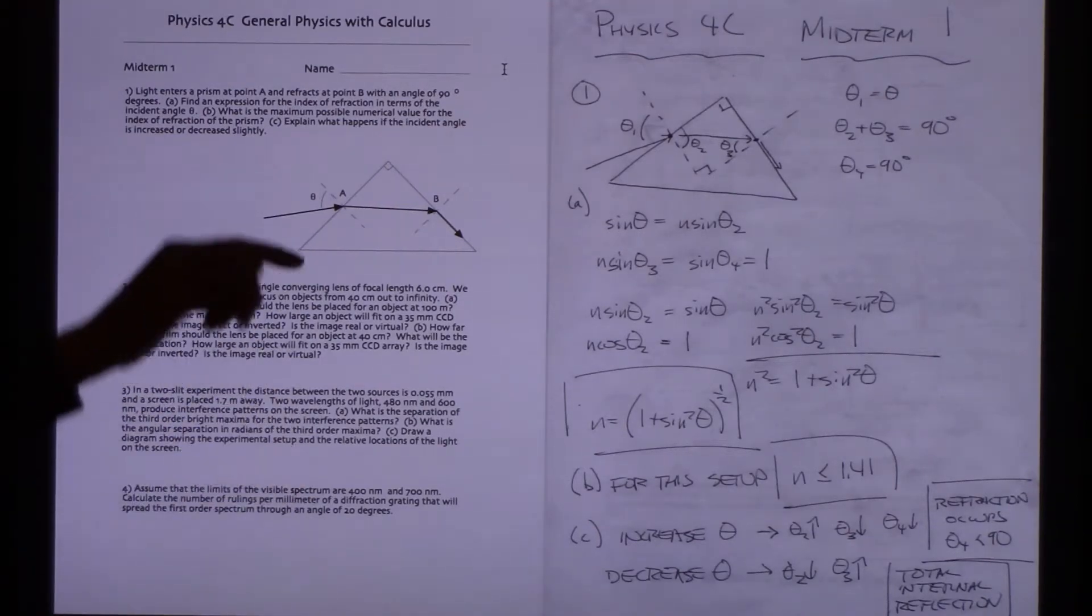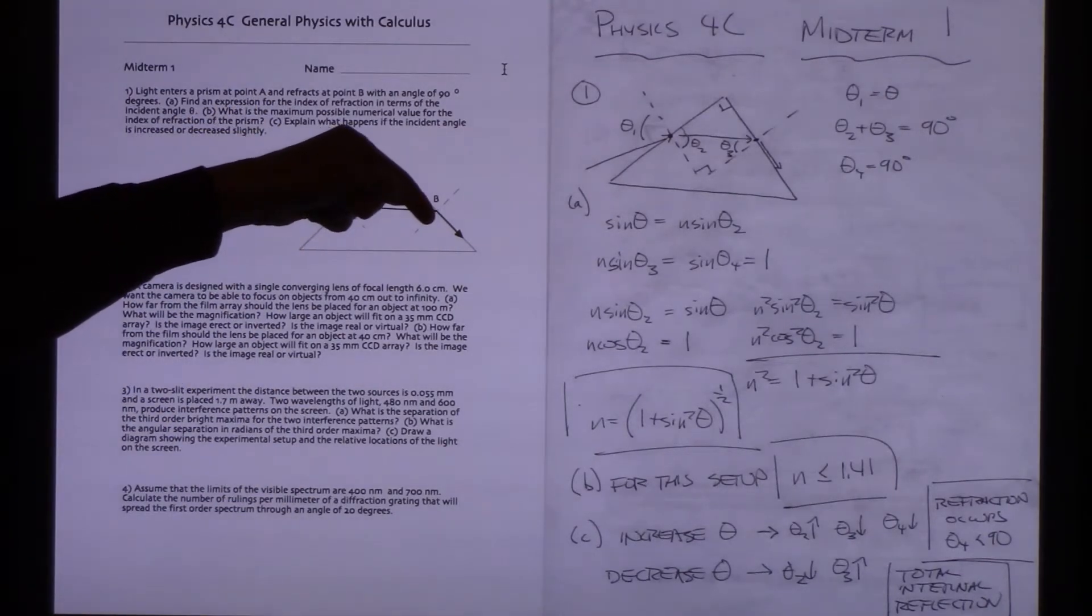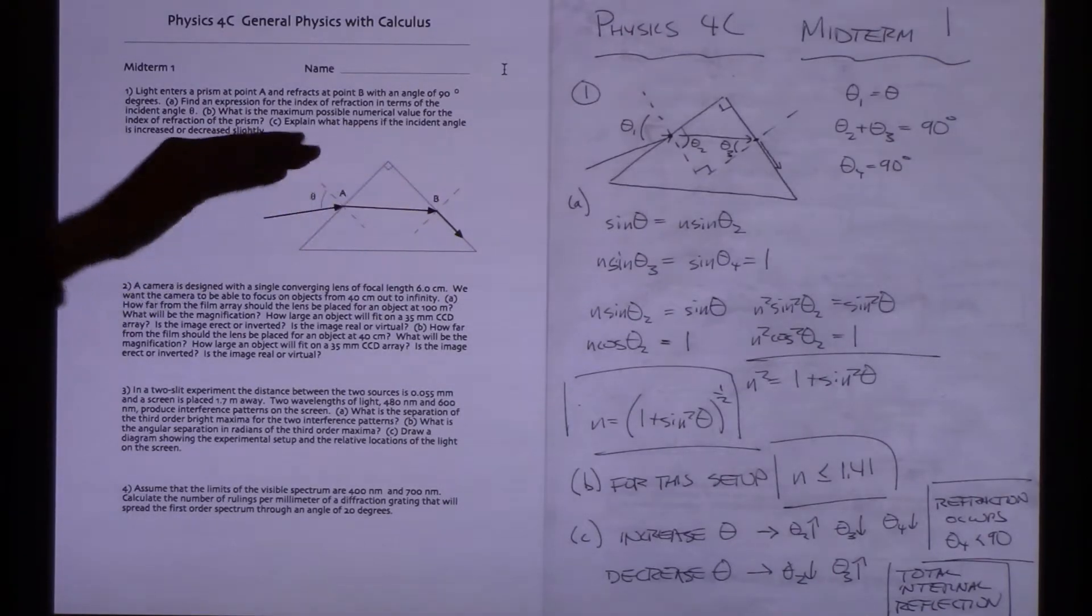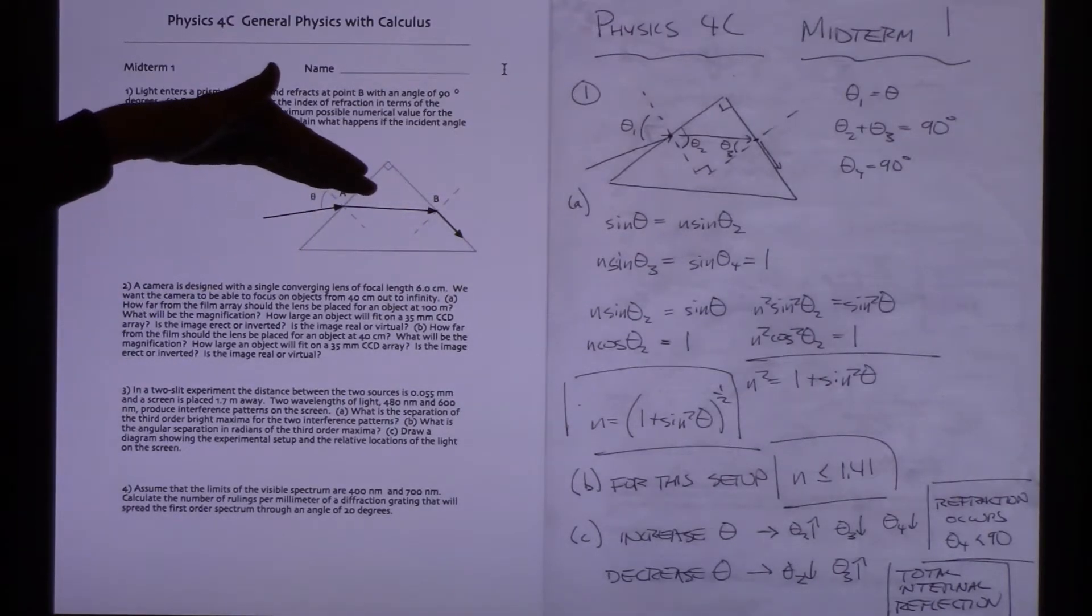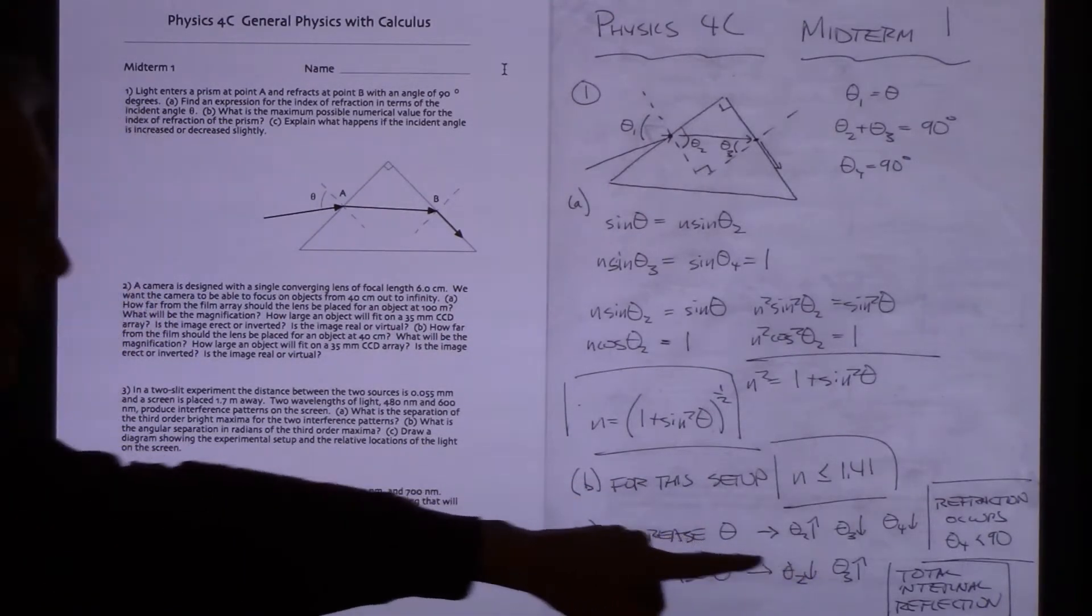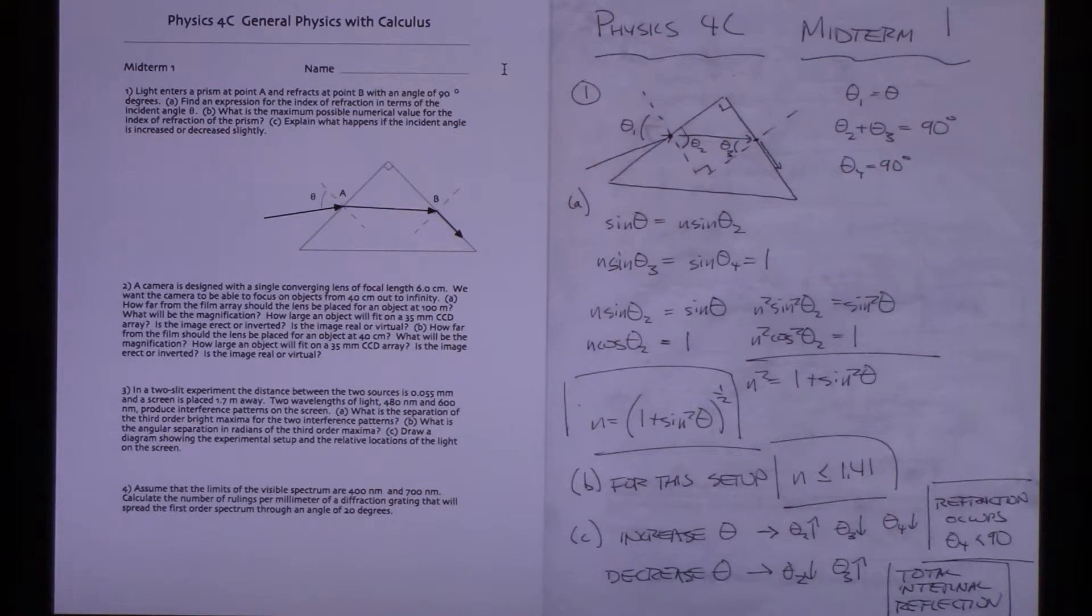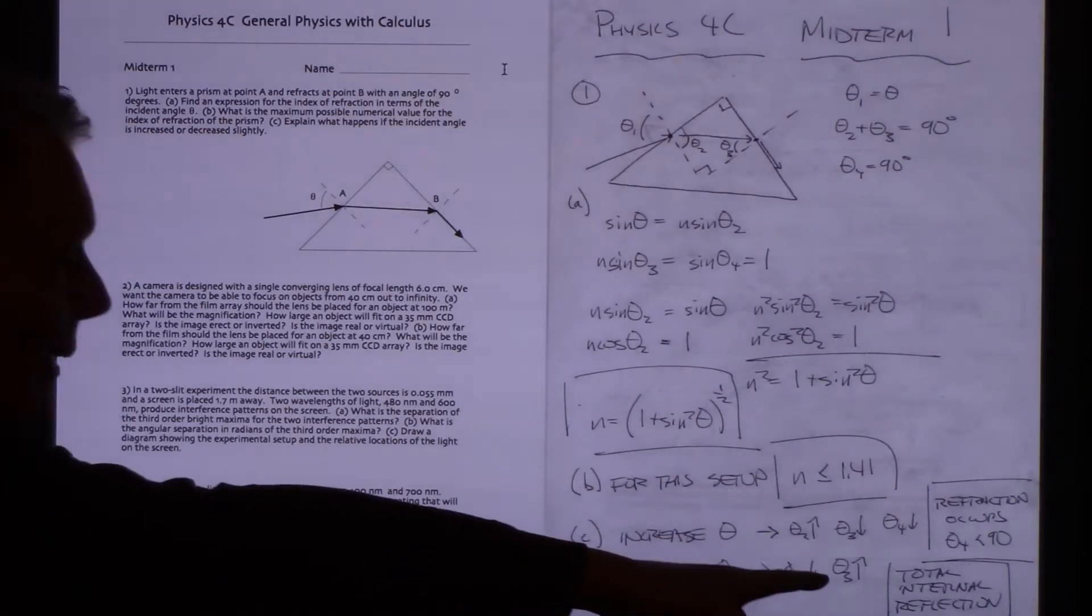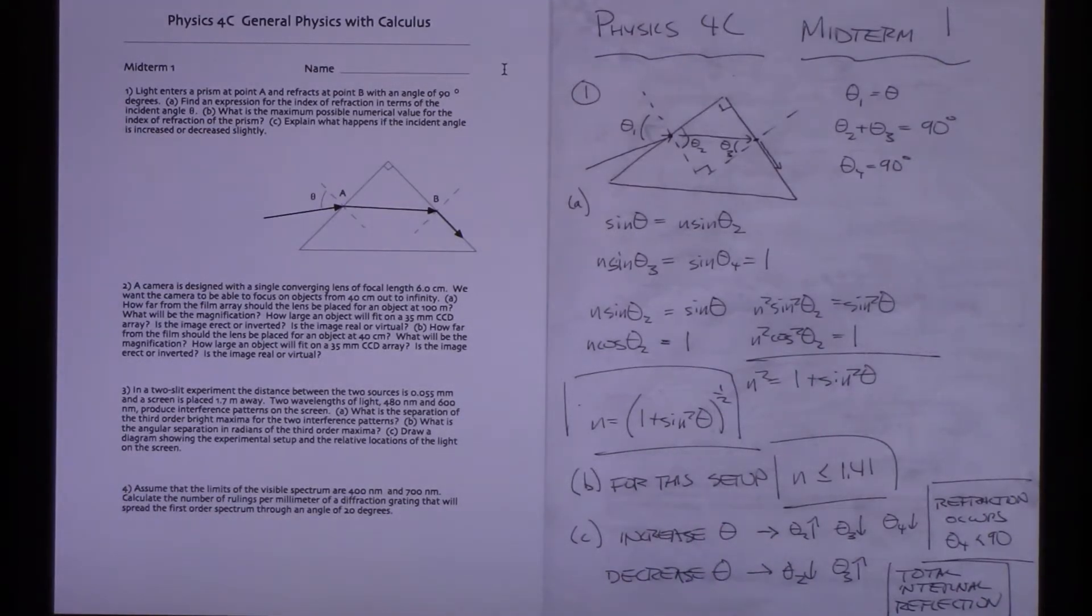So if theta increases here, this is going to come out just a little bit. What happens when theta here gets smaller? Well, theta 2 is going to get smaller, theta 3 is going to go up, theta 4 is going to go up, but wait, theta 4 can't go up. There will no longer be any refraction. The refraction path will cease to be an option, and so we'll end up with total internal reflection in that case.